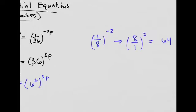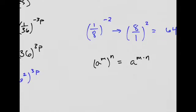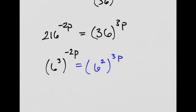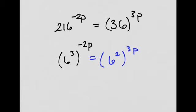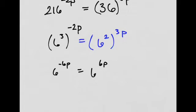Now, another review. If I have a to the mn, that's a to the m times n. So I have a power of powers - I multiply the exponents. So that's what I'm going to do on both sides here. That would mean 6 and then 3 times negative 2, that's negative 6p, equals 6 and then 2 times 3p, that's 6p.